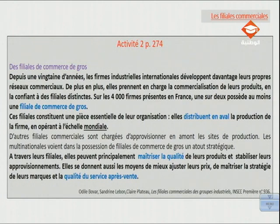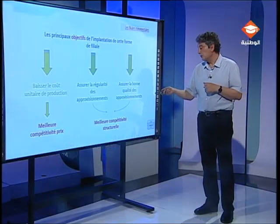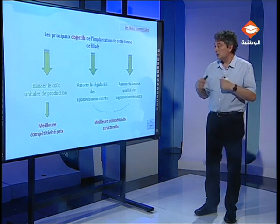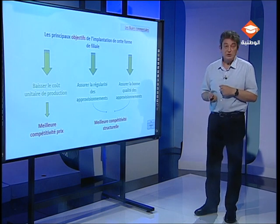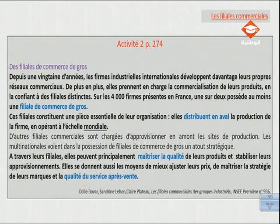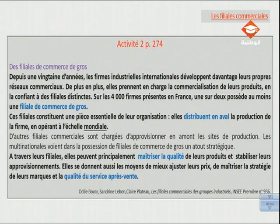Maintenant, on va voir que certaines firmes multinationales, depuis quelques décennies, implantent des filiales commerciales non plus dans le but d'obtenir une meilleure compétitivité-prix ou une meilleure régularité des approvisionnements. Depuis une vingtaine d'années, les firmes industrielles internationales développent davantage leurs propres réseaux commerciaux. De plus en plus, elles prennent en charge la commercialisation de leurs produits en la confiant à des filiales distinctes. Sur les 4000 firmes présentes en France, une sur deux possède au moins une filiale de commerce de gros.